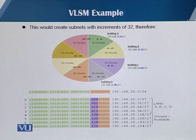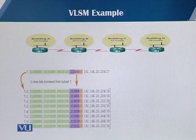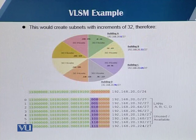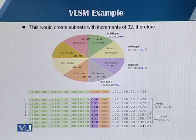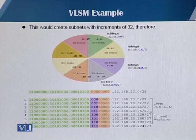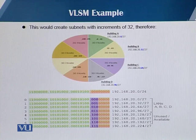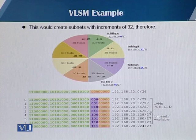Building A is assigned the subnet ID 192.168.20.0/27, building B gets .32, building C gets .64, and building D gets .96. The binary format of the IP addresses and the number of bits used in the host part for creating the subnets are also shown at the bottom of the slide. Only the first four subnet IDs are used; the remaining four subnet IDs will be unused in this example.